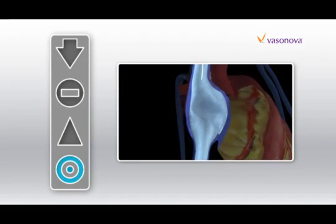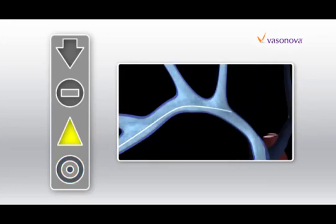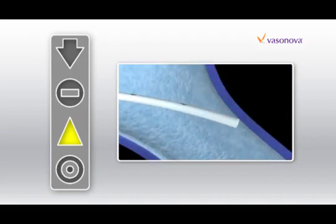The yellow triangle indicates there is not enough information available, which may occur if the catheter tip is against the vessel wall.